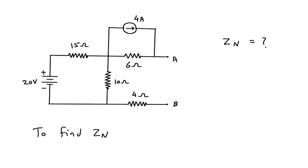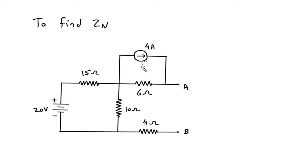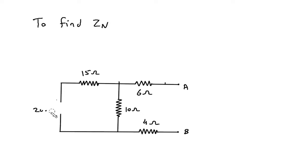Now to find Zn, we turn off the current source so it will be open circuited, and we turn off the voltage source so it will be short circuited. After deactivating both sources, this remaining circuit will give us our Zn, the Norton's equivalent impedance.